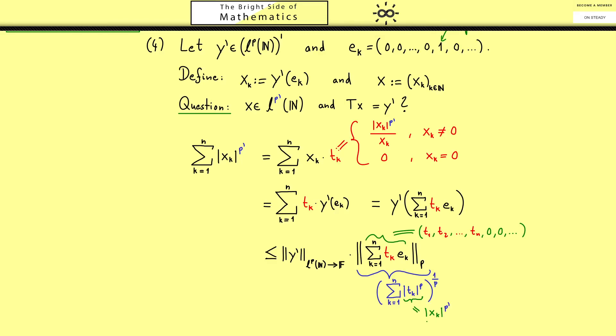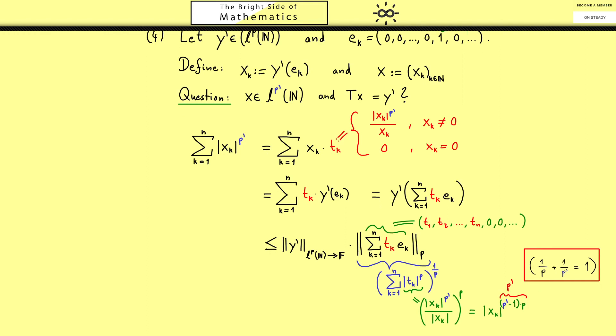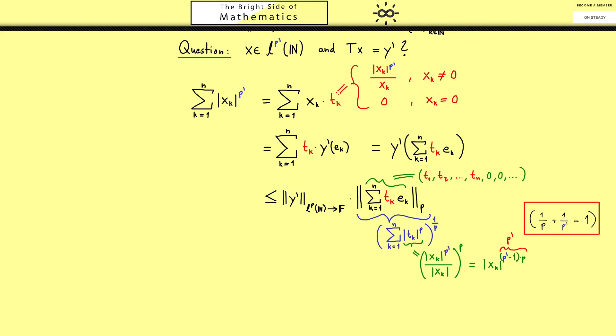And now comes the step where we want to get rid of tk again. By ignoring all the zeros we know by the definition of tk that we have the power p prime and xk in the denominator but now also with the absolute value, and of course now everything to the power p. This means that we have here xk to the power p prime minus 1 times p. Now by using the definition of the Holder conjugate here we see this one is simply p prime again. Now let's put everything together and you see it looks much easier now.